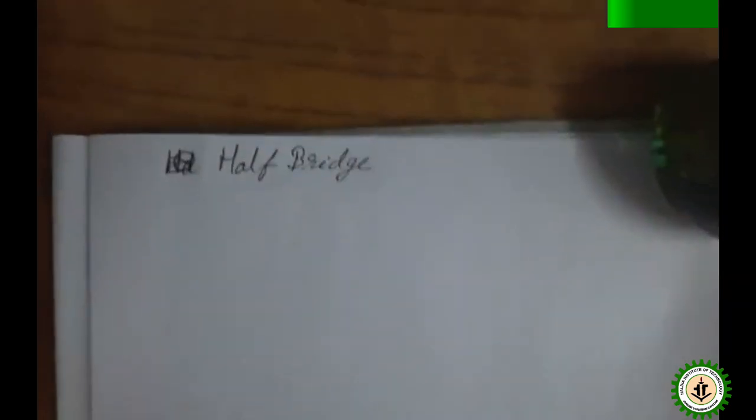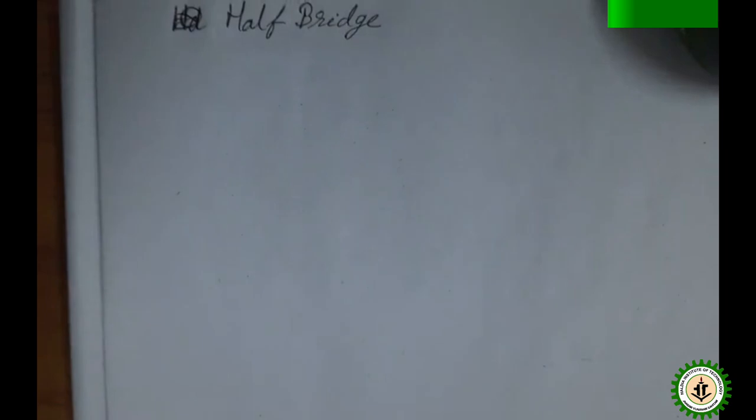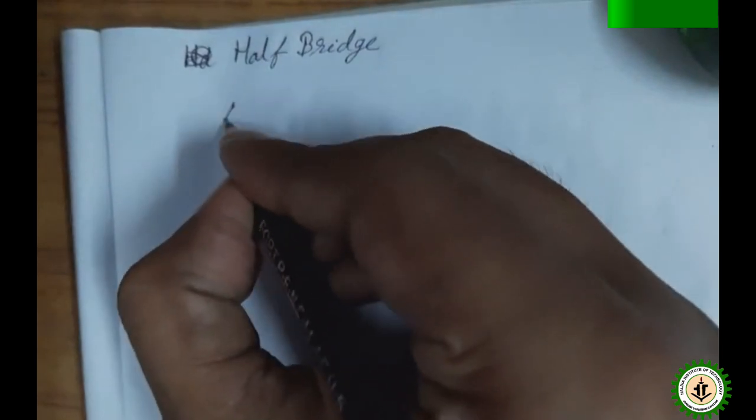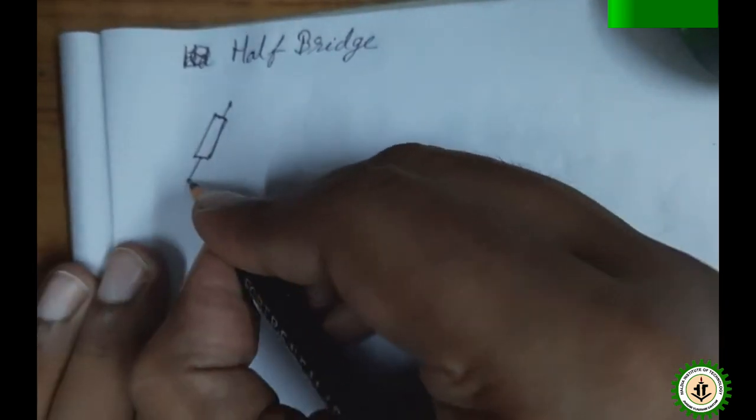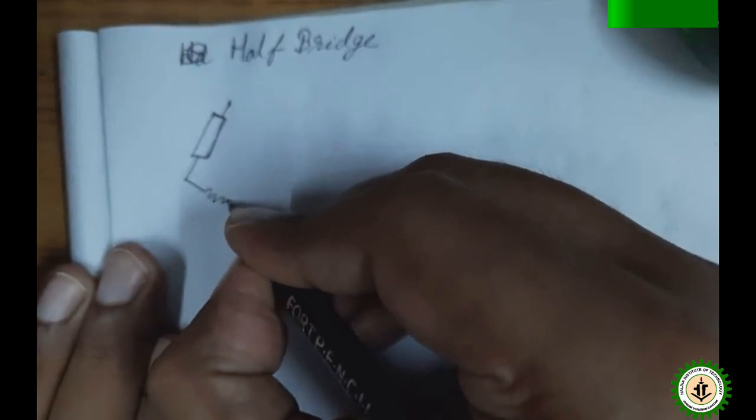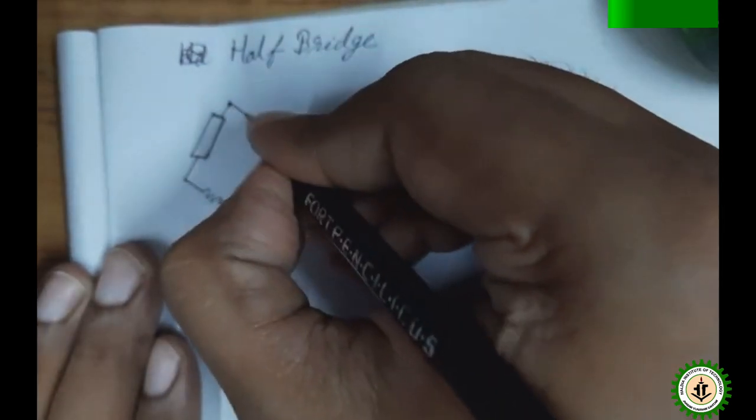Next, let us discuss the half bridge. It is called half bridge because in the Wheatstone bridge, which has four arms, we use two strain gauges in two consecutive arms, and the other two arms remain standard resistances.